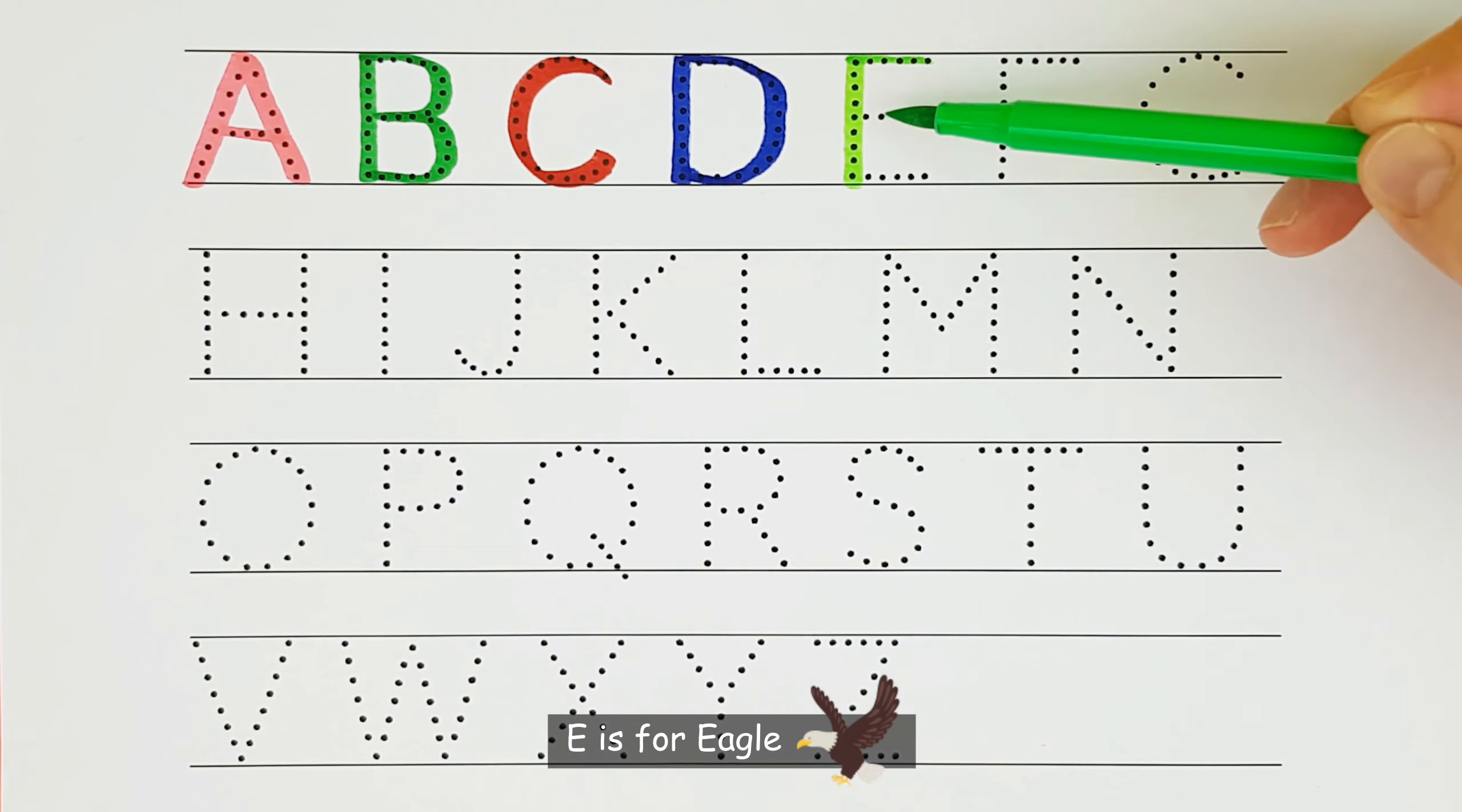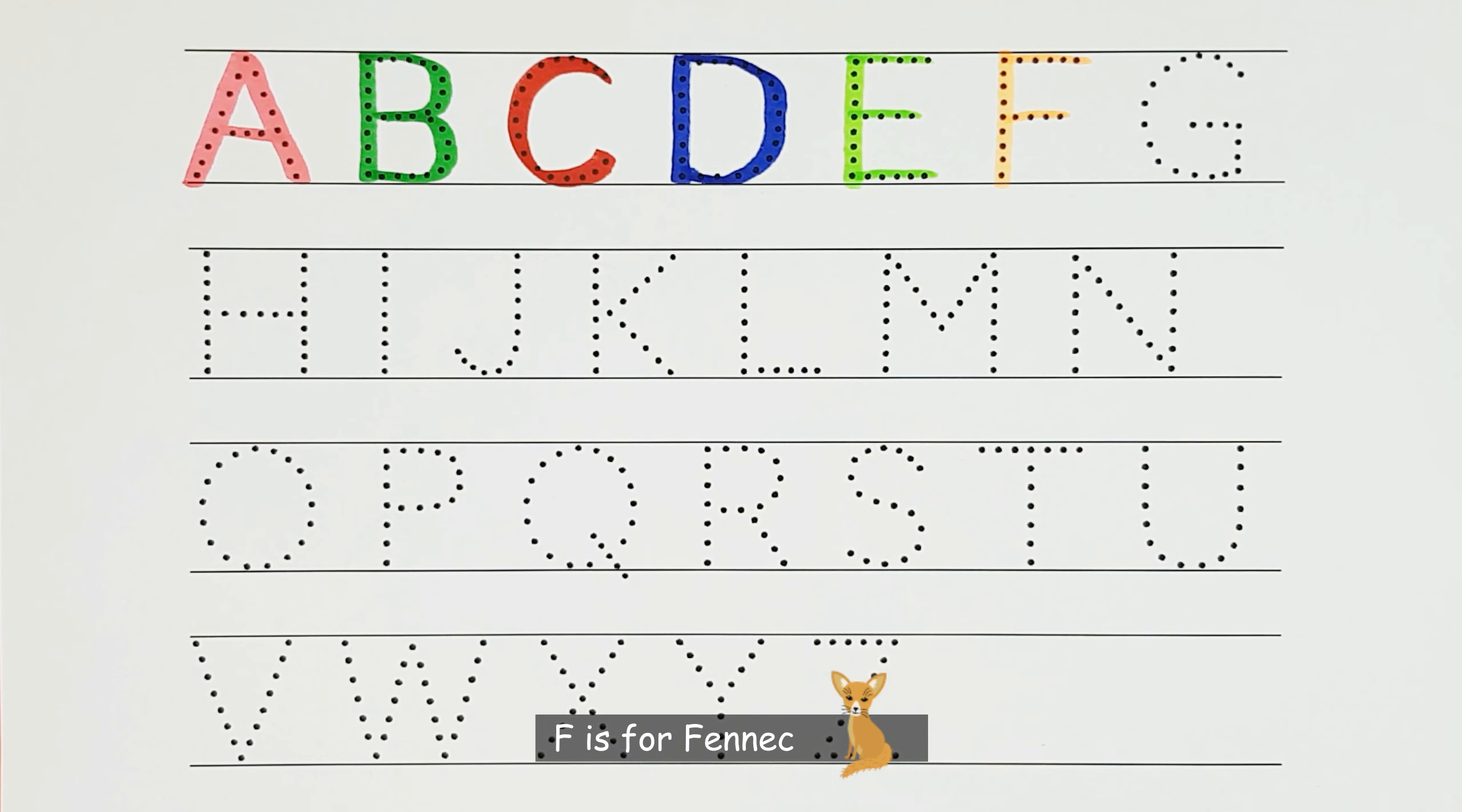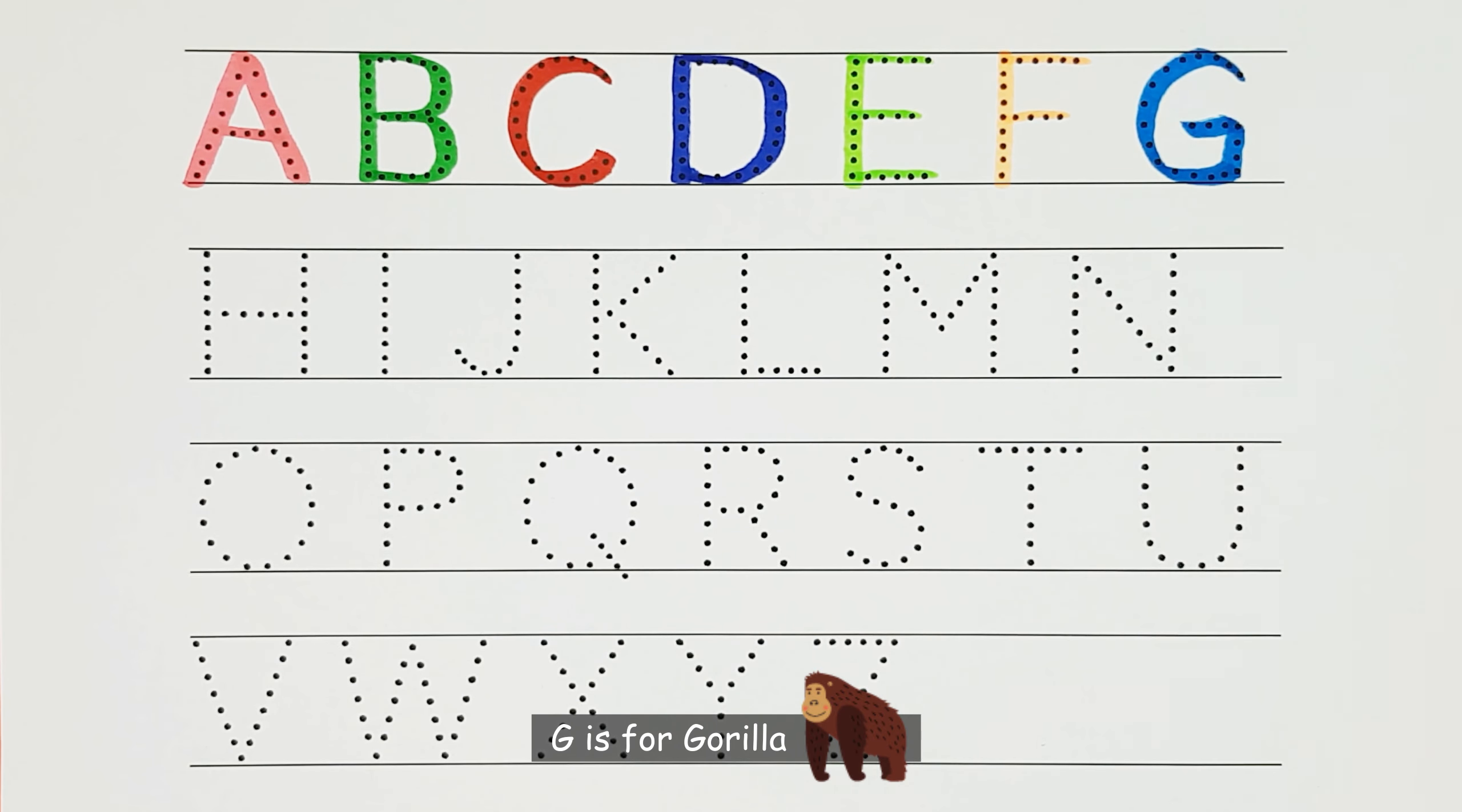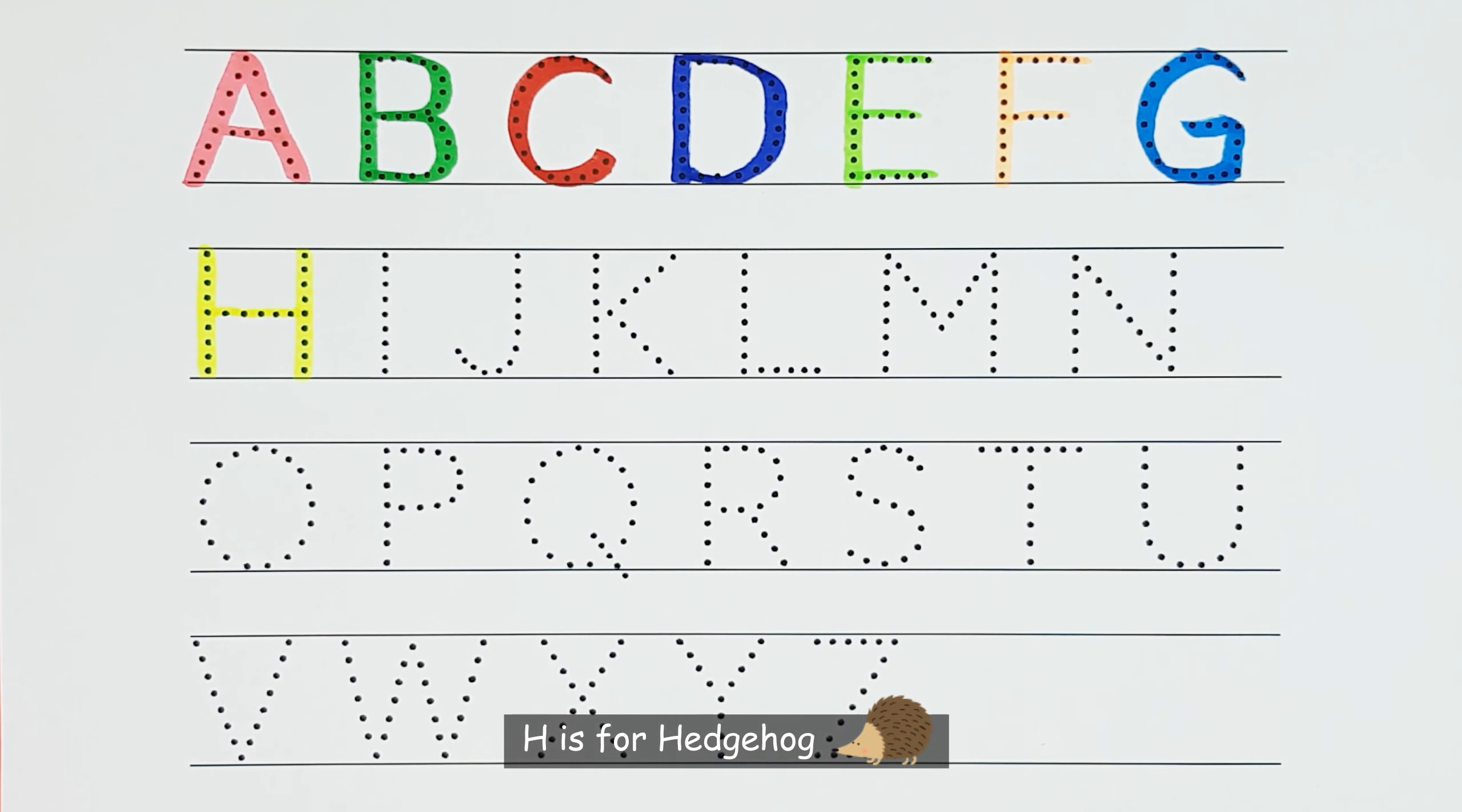E. E is for Eagle. E. F. F is for Fennec. F. G. G is for Gorilla. G. H. H is for Hedgehog. H.